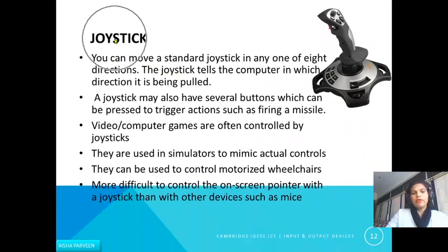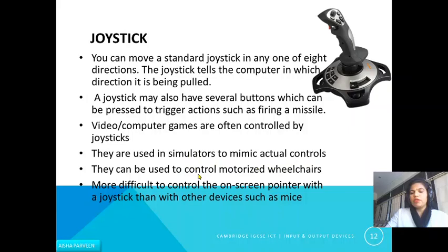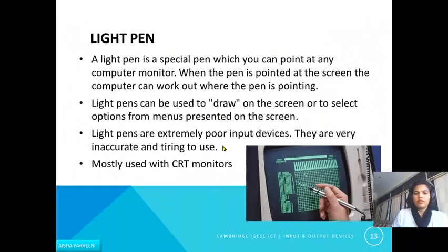The next pointing device is the joystick. You can move a standard joystick in any one of eight directions. The joystick tells the computer in which direction it is being pulled. It may also have several buttons which can be pressed to trigger actions such as firing a missile. Joysticks are used in video games, simulators to mimic actual controls, and to control motorized wheelchairs. However, they are more difficult to use for moving a screen pointer compared to a mouse.